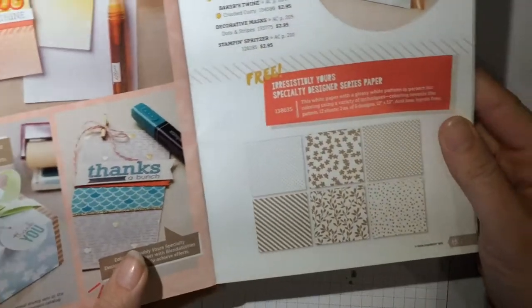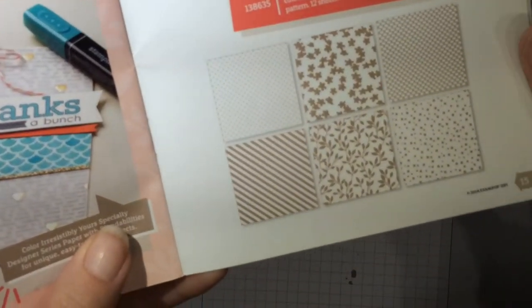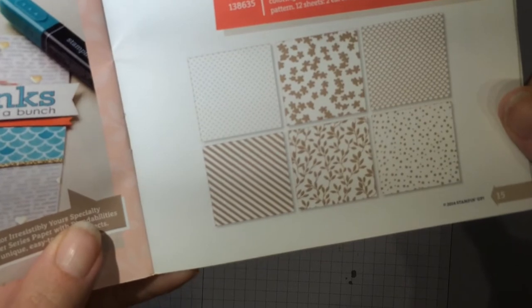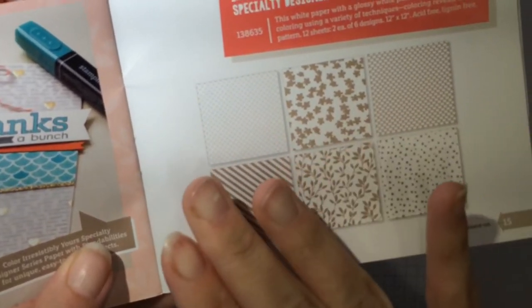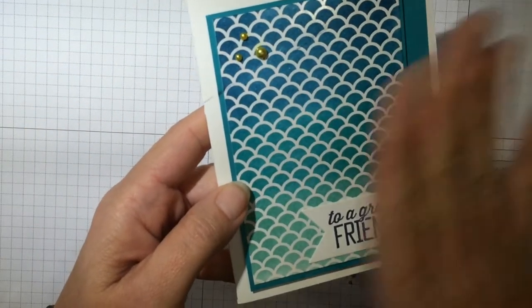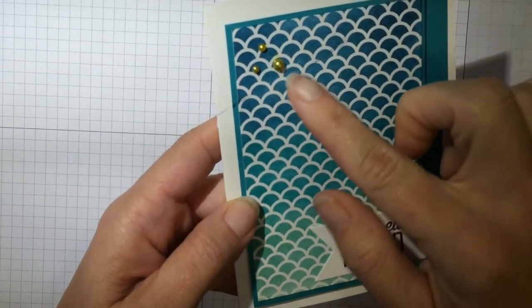It's in the 2015 Celebration Catalog. You can see it right here. It kind of looks a little boring when you see it like that. You think, meh, but what it is is paper that has a glossy pattern over it so that you can ink it and then wipe away the ink on the white glossy surface.